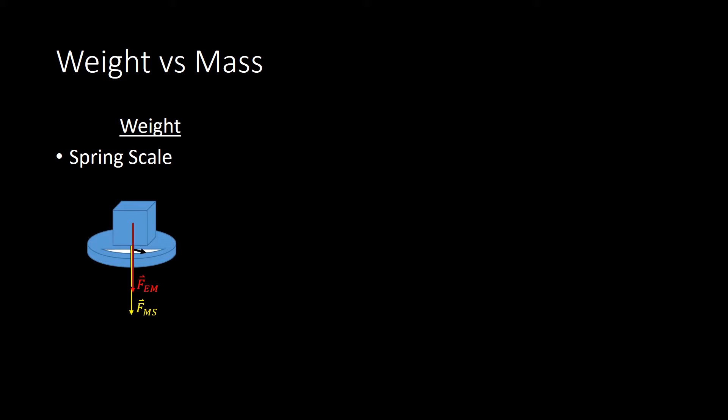It's a long-range force, so it acts from the center of the mass, and it's exerted by the earth on the mass, so we label it as F_em. Another force that must certainly be present is the one that's going to counter this force. It's the upward force by the scale acting on the mass.